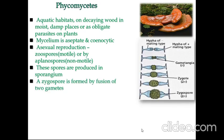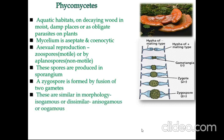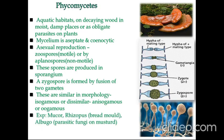A zygospore is formed by fusion of two gametes. These can be similar in morphology — isogamous — or dissimilar — anisogamous or oogamous. Some examples of Phycomycetes are Mucor, Rhizopus, bread mold, and Albugo, which is a parasitic fungus on mustard.